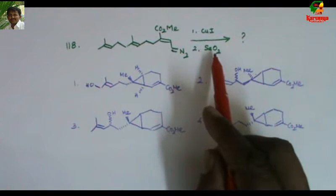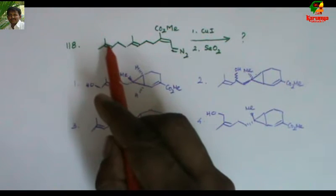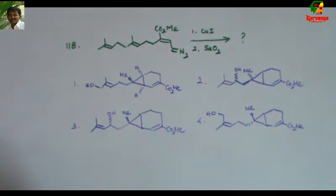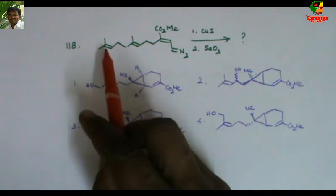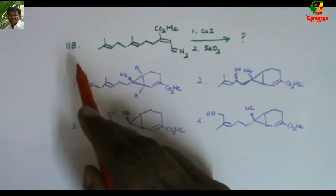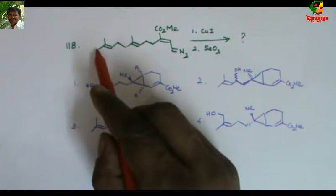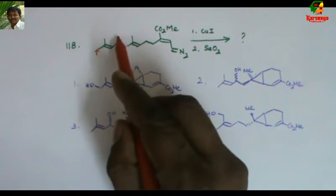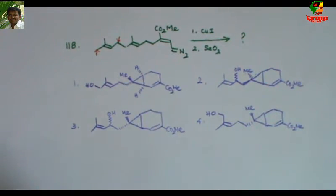When we add selenium dioxide, this double bond undergoes allylic oxidation. Since it is not a symmetrical alkene, the oxidation may take place here or here. Both options have been given. Which one is correct?